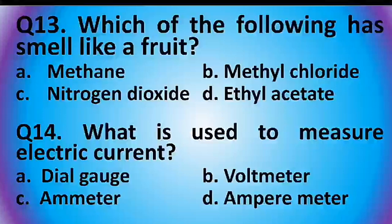Question 13: Which of the following has a smell like a fruit? Options are: methane, methyl chloride, nitrogen dioxide, or ethyl acetate. The answer is option D: ethyl acetate.